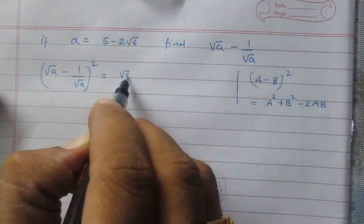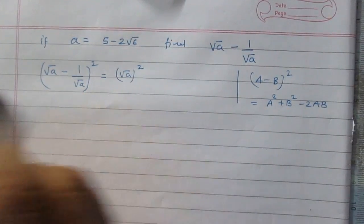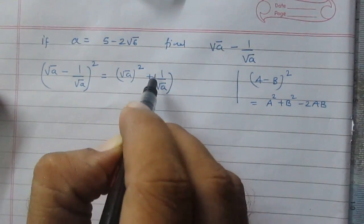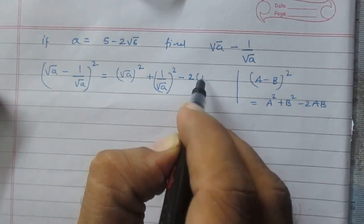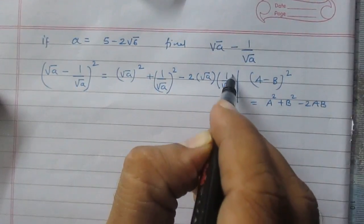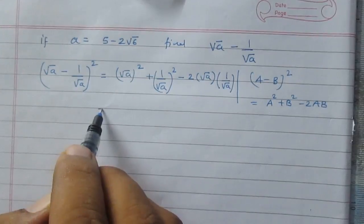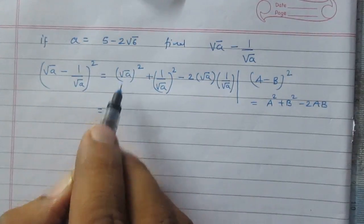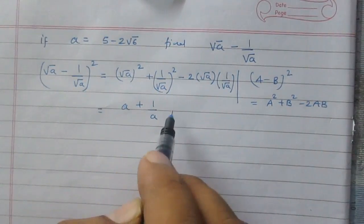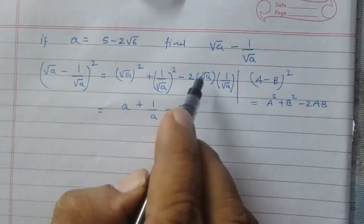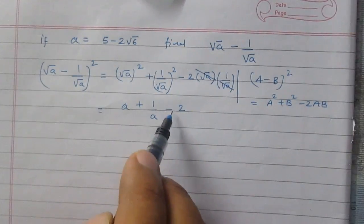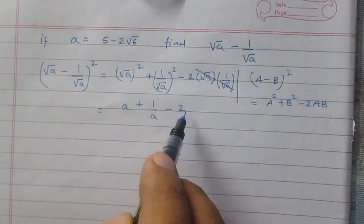It is equal to square root a squared, plus 1 upon square root a squared, then minus twice of square root a multiplied by 1 upon square root a. We know that square of square root a is a itself, plus 1 upon a, then minus 2. Square root a in the numerator cancels with square root a in the denominator, so it is minus 2 multiplied by 1, which is minus 2 itself.